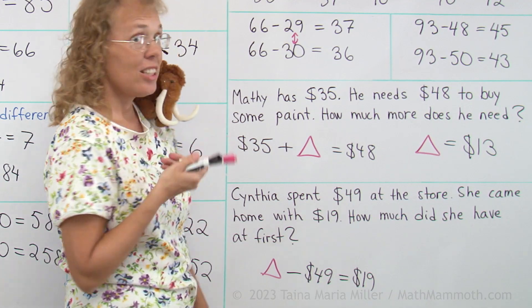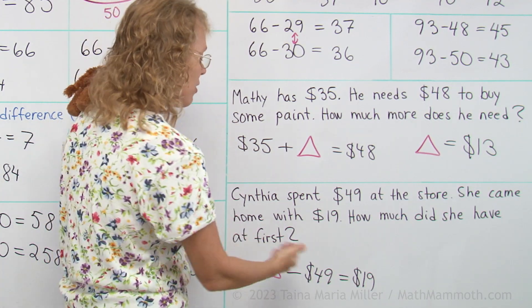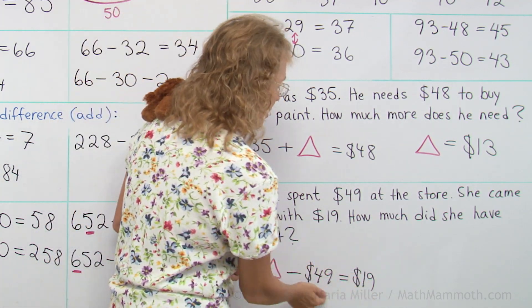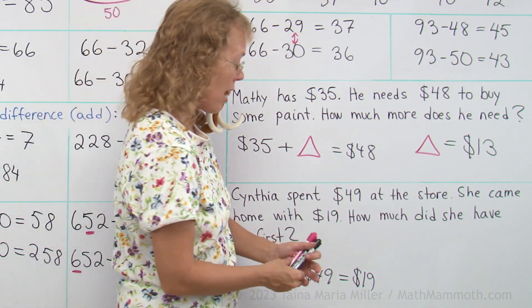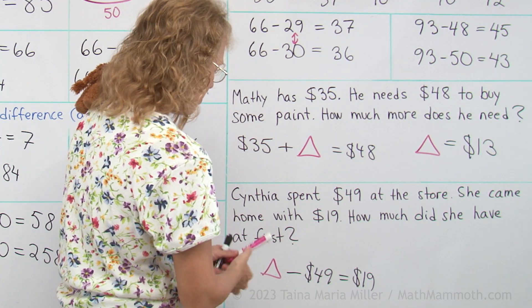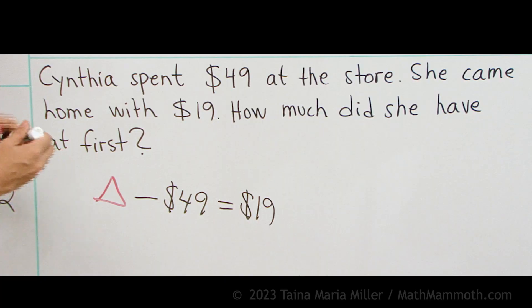And I can also write an addition. Because to solve this kind of thing I actually need to add this and this, right? To find how much the triangle is I have to add. So let me write an addition too. I will write $19 plus $49 equals my triangle.